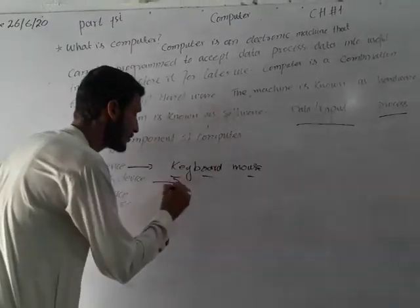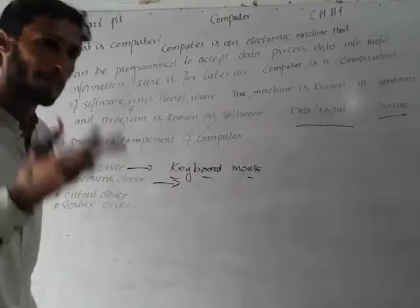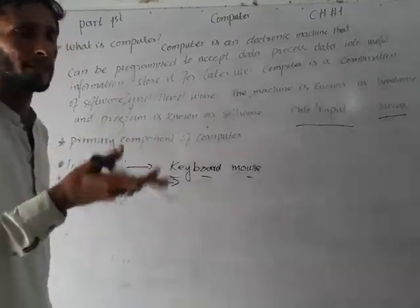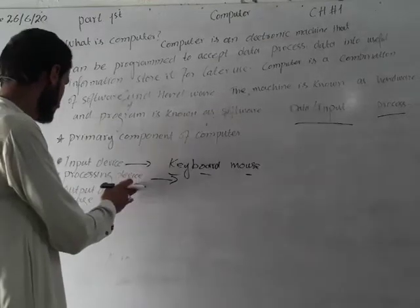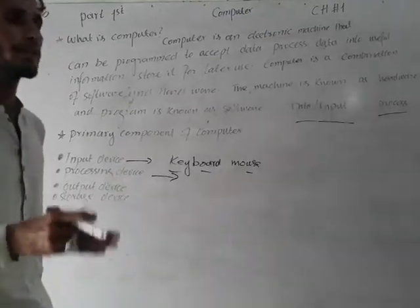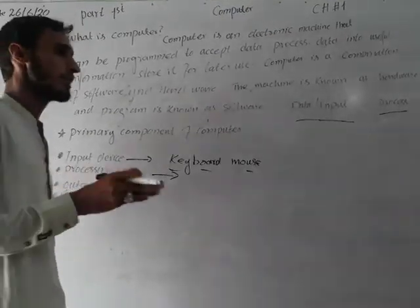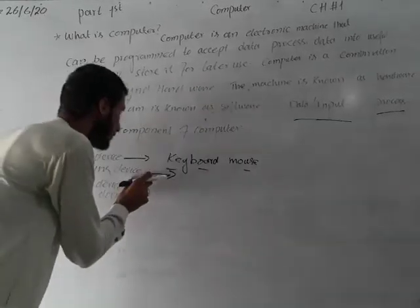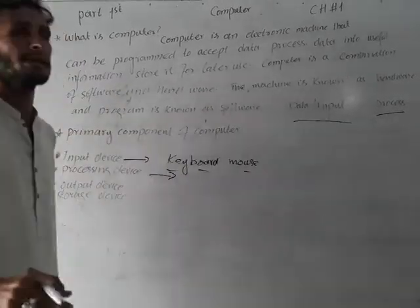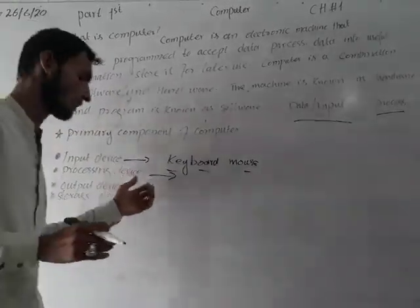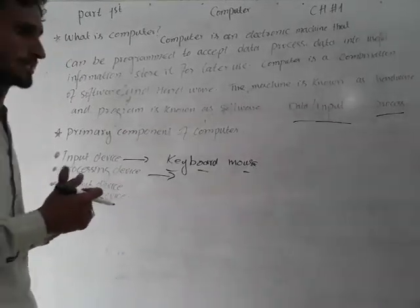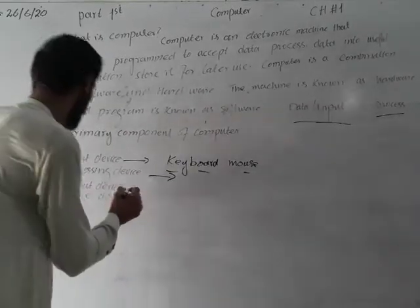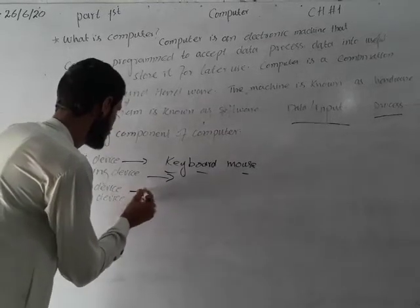The Central Processing Unit processes the output. The processing unit is also known as the Processor, and we call it the brain of the computer. After that, we will talk about the output device.